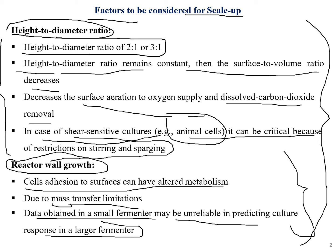Data obtained from a small fermenter may be unreliable in predicting culture response in a larger fermenter. A larger fermenter is preferred as it gives more accurate readings. So the two key scale-up factors so far are: height to diameter ratio, and reactor wall growth.